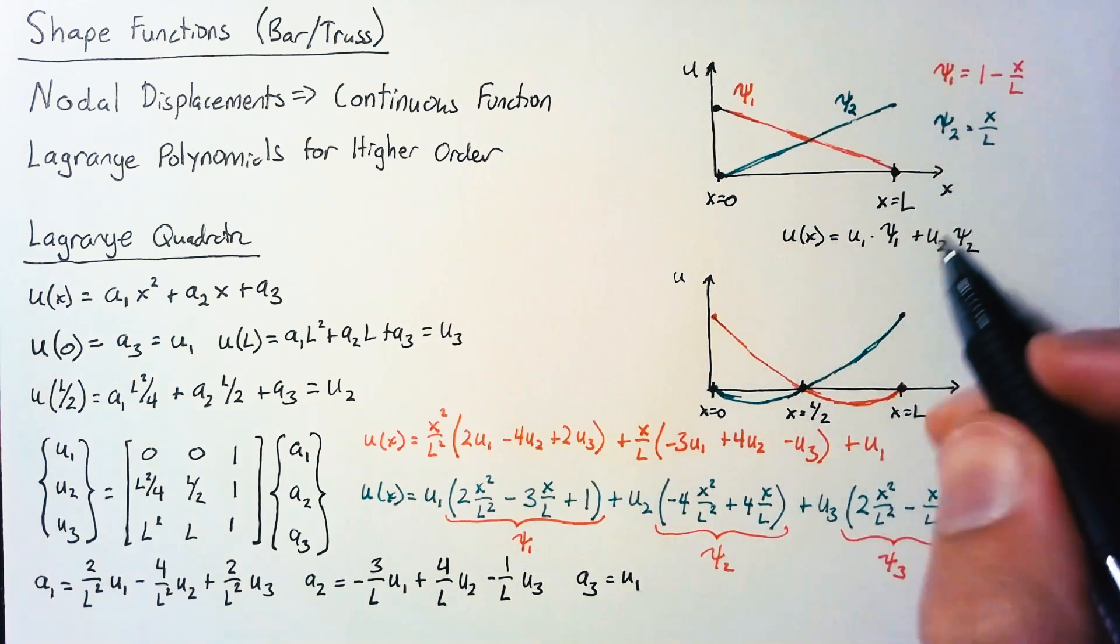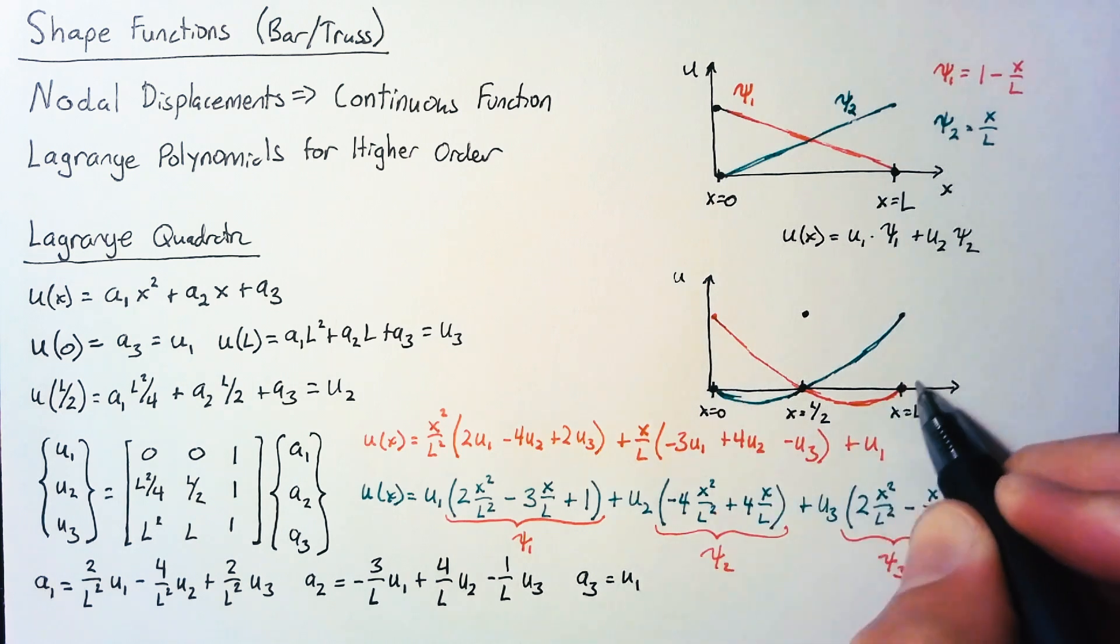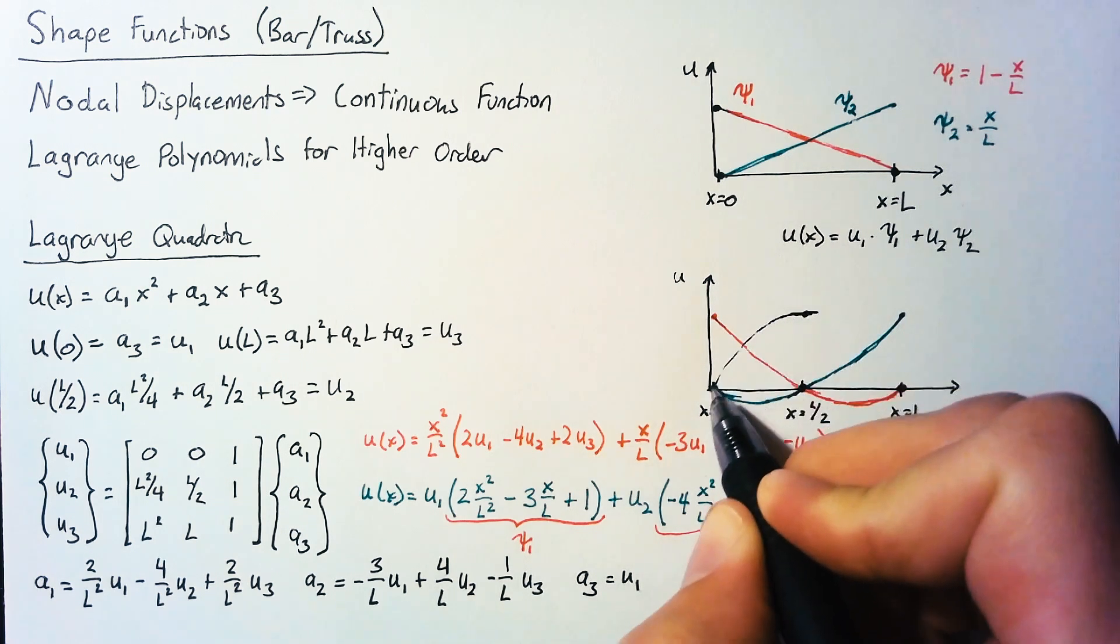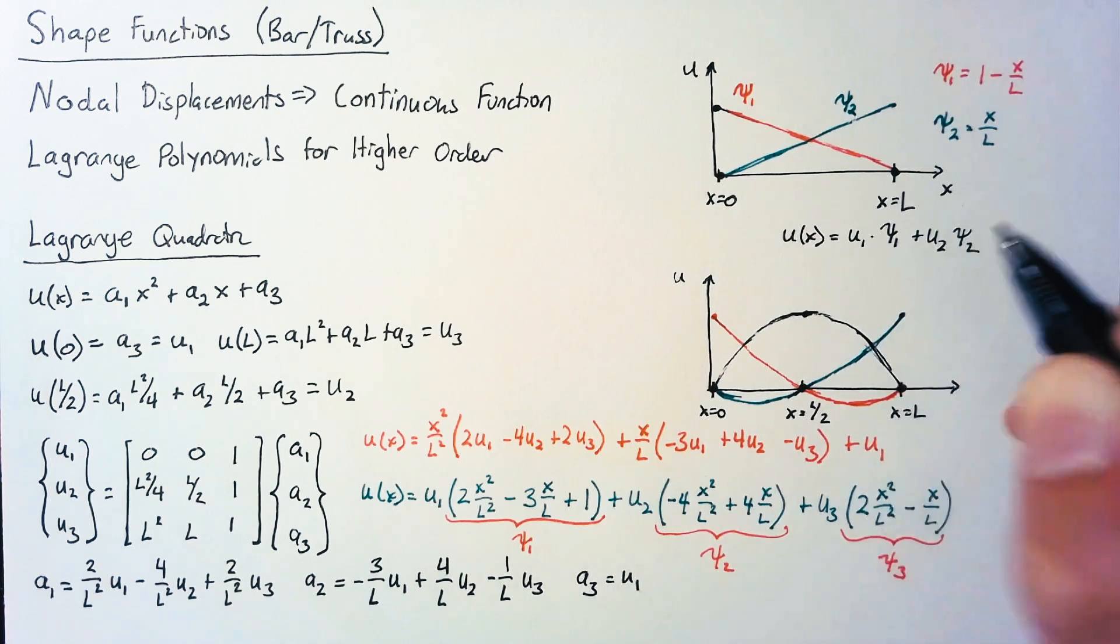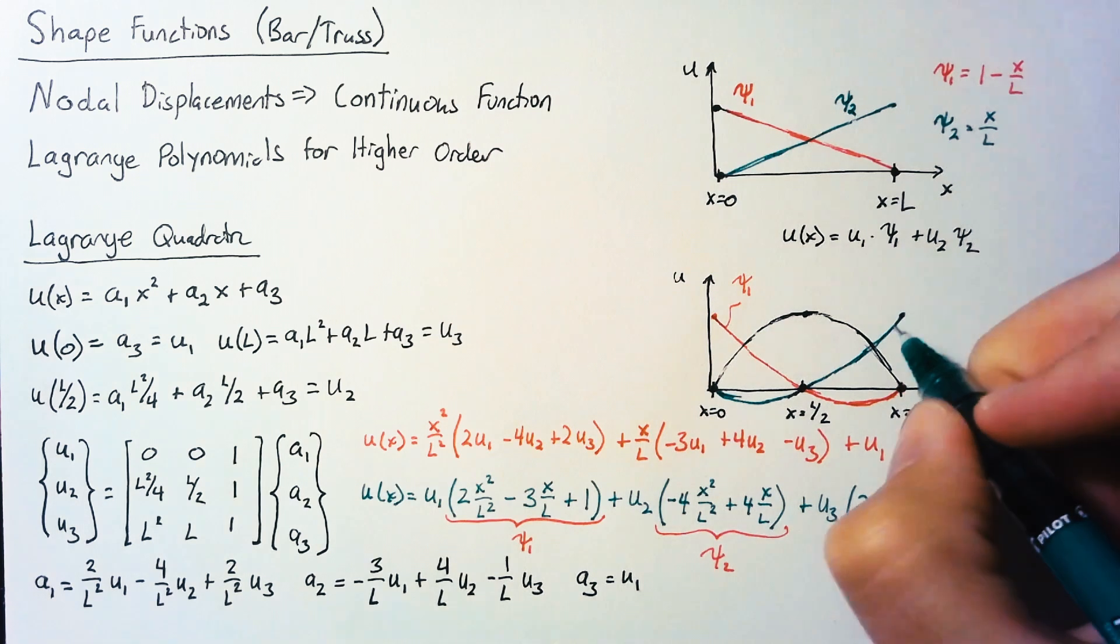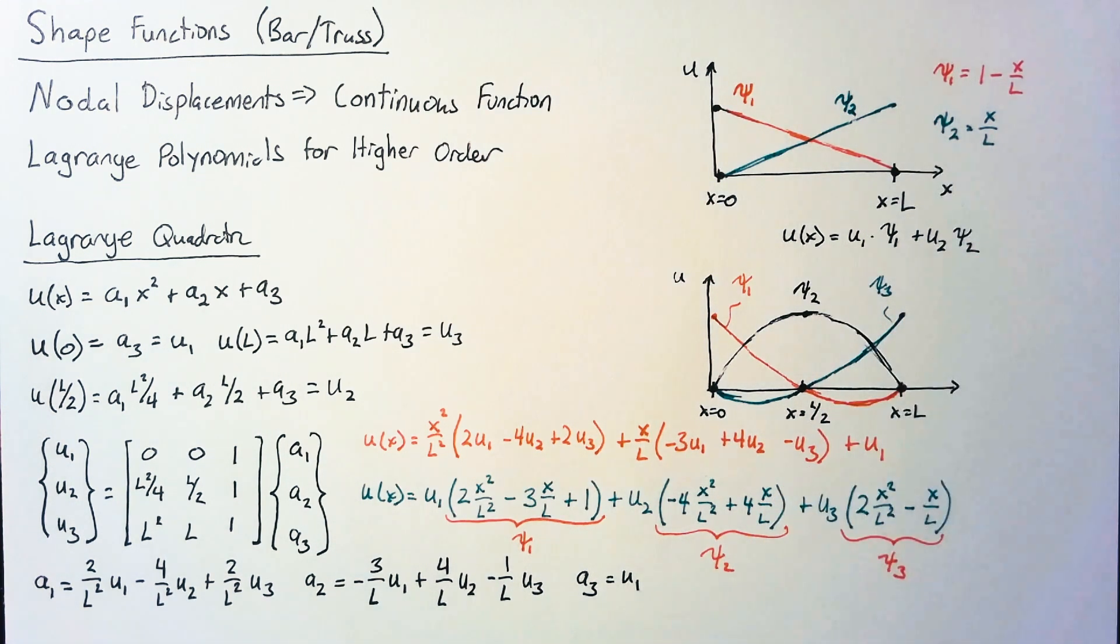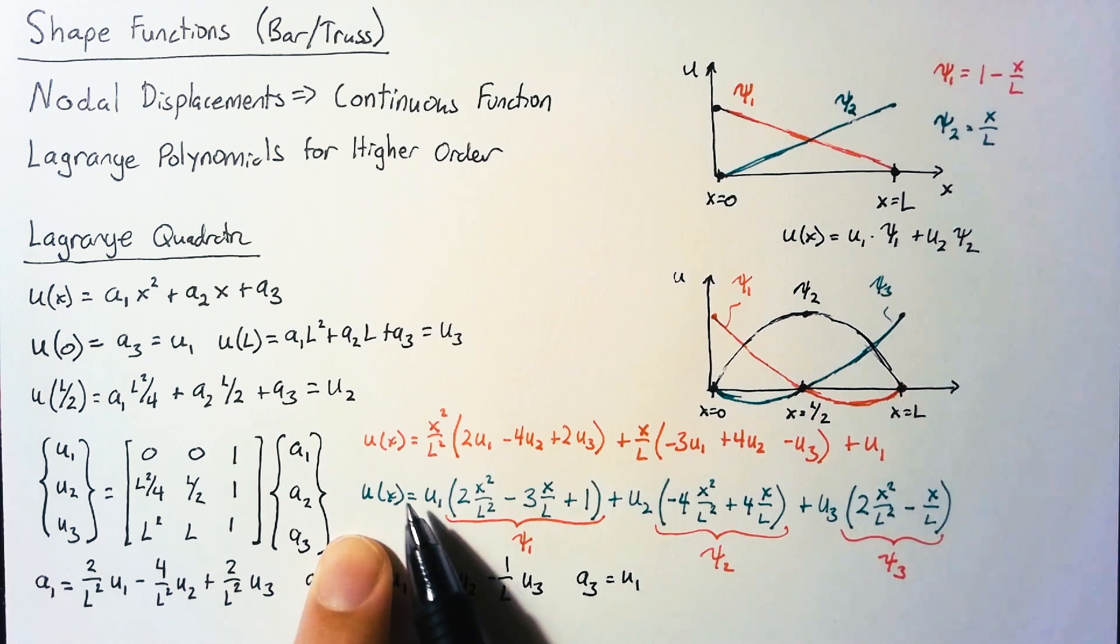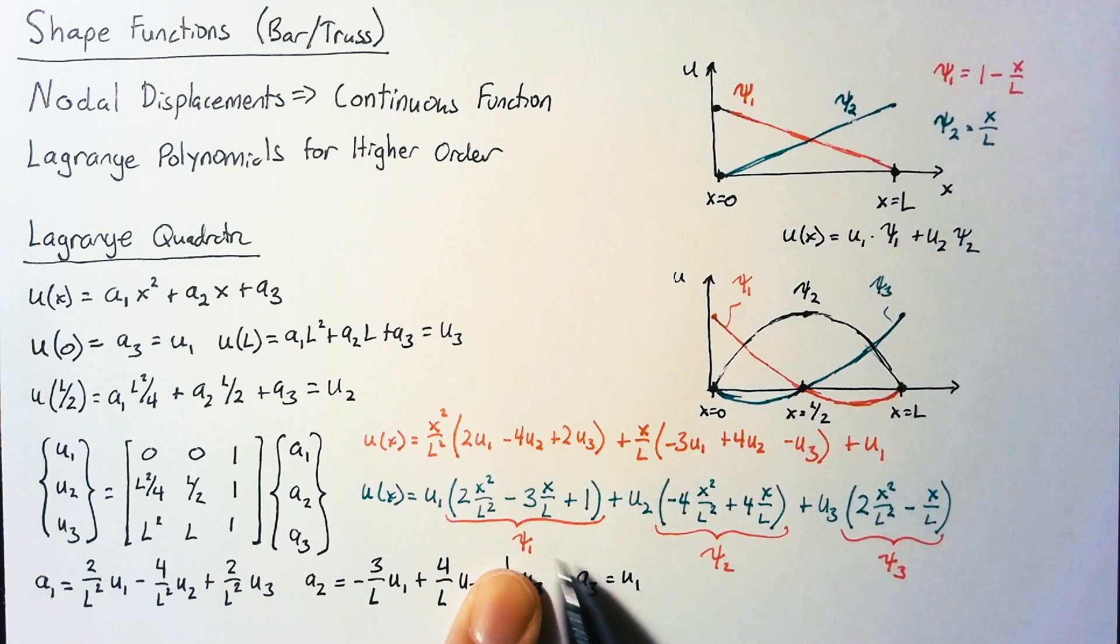Then finally, for psi2, at x equals l over 2, we'll end up with a value of 1, and then we'll have 0 at the other two points. So we'll just have a nice, simple parabola here. So our shape functions are psi1, this is psi3, and our last one was psi2. And once again, we see that our continuous position function is simply equal to our nodal displacements multiplied by our shape functions.